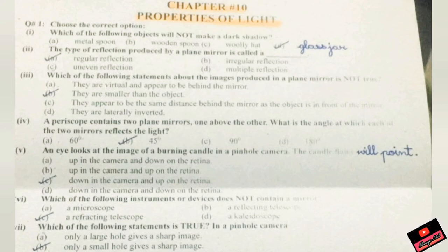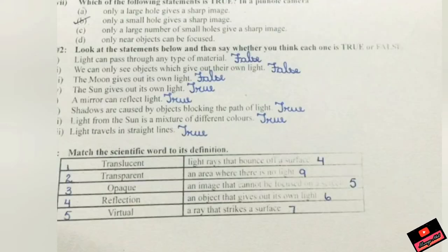Question number five is: an eye looks at the image of the burning candle, down in the camera and up on the retina. Question number six is: which of the following instrument devices does not contain a mirror? It's a reflecting telescope. Which of the following statement is true in a pinhole camera? Only a small hole gives a sharp image. Number two is very easy, you have to do true or false and all the answers are written. Pause this video and write your answers or revise your answers.